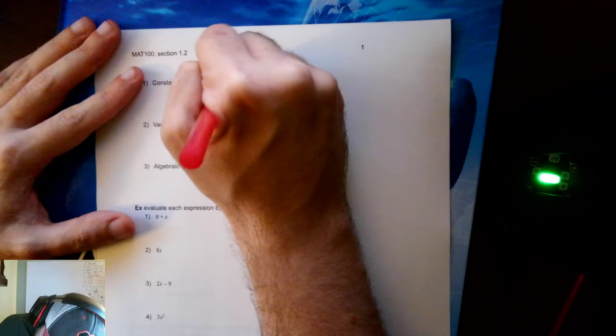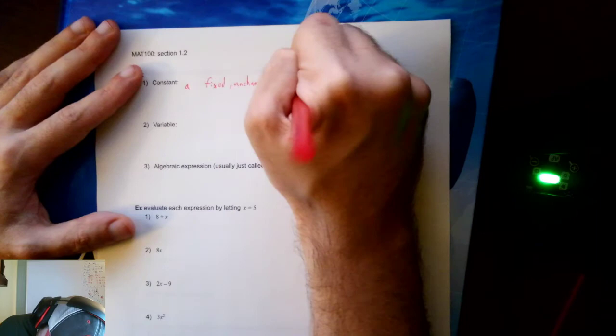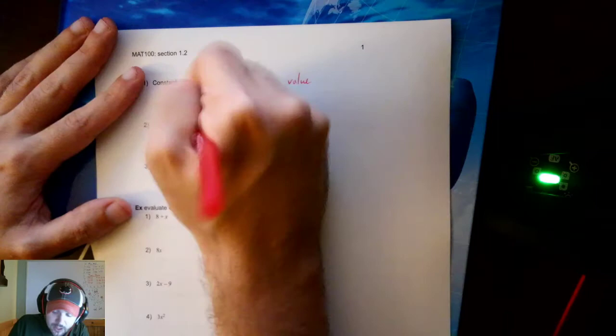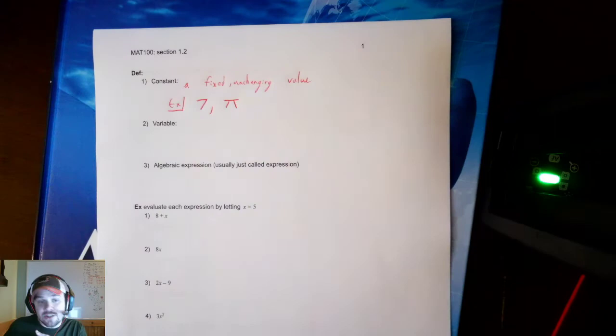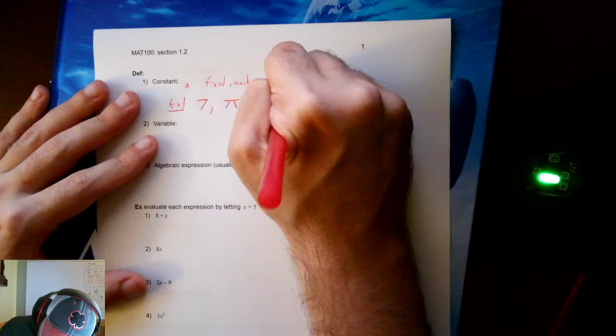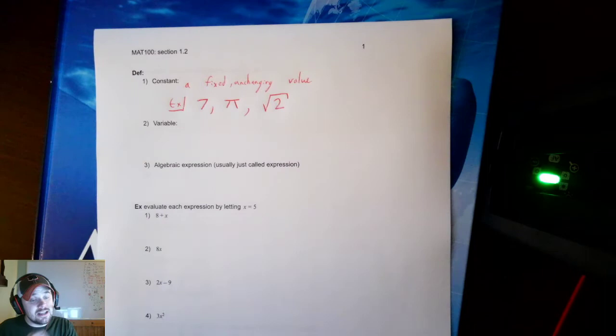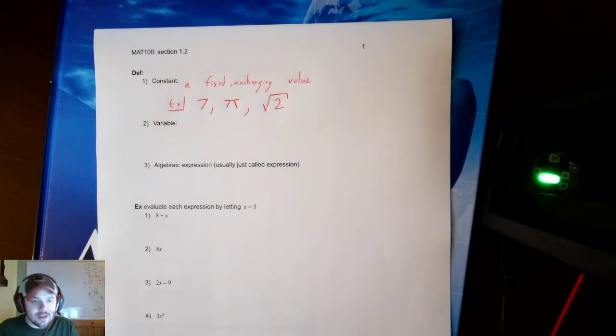First we have constant. A constant is a fixed unchanging value. And some examples: the number seven, it's always a number seven. How about pi? That's a constant too. Pi is always 3.141592, so on and so forth. The square root of two. You might not know the square root of two off the top of your head, but it's always going to be the same number. It's fixed and unchanging.